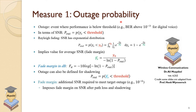Let's start with the first measure: the outage probability. Outage is the event where the performance is below a certain threshold. For example, digital voice requires a certain probability of error or bit error rate, say 10 to the power of minus 3 or 10 to the power of minus 4. If you have worse than that, you won't get good digital voice. To achieve the required bit error rate, there is a certain required signal-to-noise ratio, and if your SNR is below that threshold, we say we have outage.